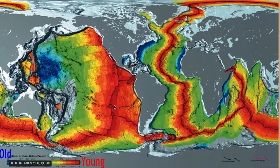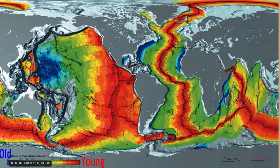This image shows the age of rocks depending on how far they are from mid-oceanic ridges. The lines represent mid-oceanic ridges where plates are diverging. Red rocks are young and blue rocks are old. As we move away from the mid-oceanic ridges, the rocks get progressively older — in the dark red region, new oceanic crust is being made, but as you move away, you encounter older oceanic crust.